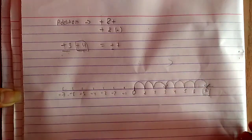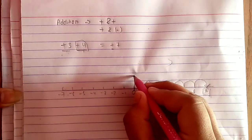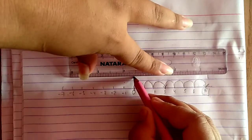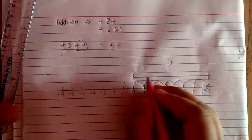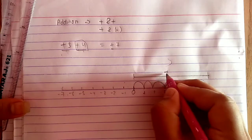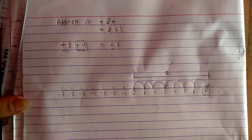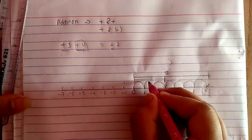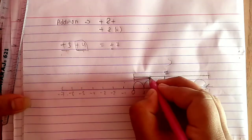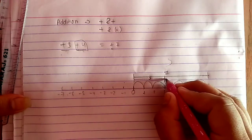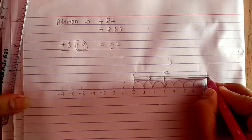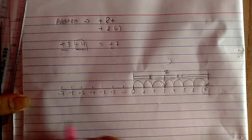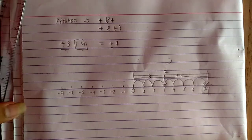I'll draw and write seven here. Up to this point is three, so I write three. From three to this point is plus four, so I write four. This is how you do the addition of two positive integers on a number line.